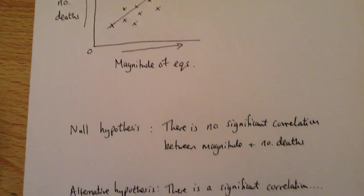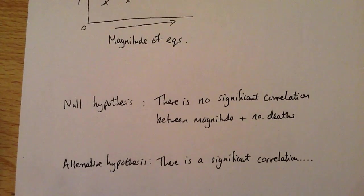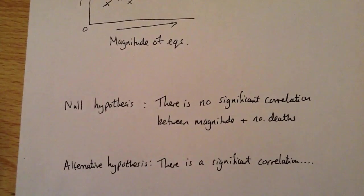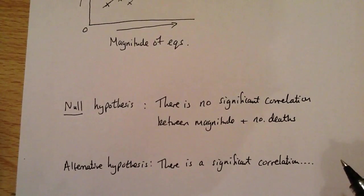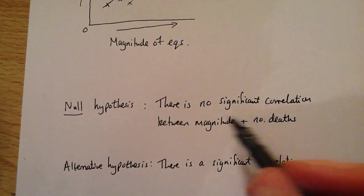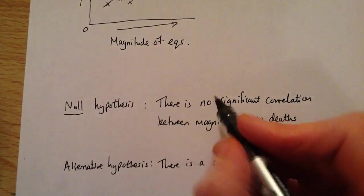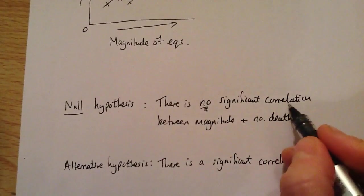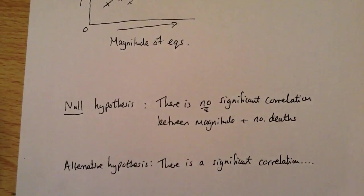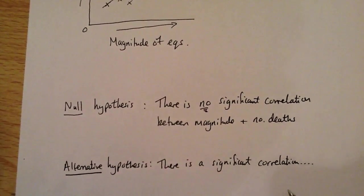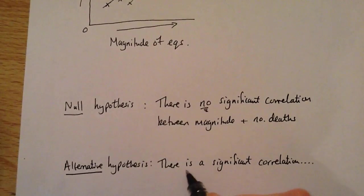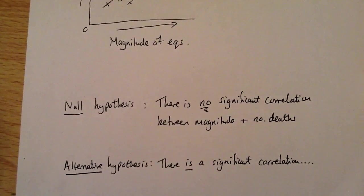The first thing you need to do is create a null hypothesis and an alternative hypothesis. The null hypothesis always has the word 'no' in it. In this case: there is no significant correlation between magnitude of earthquake and number of deaths. Then you create the alternative: there is a significant correlation between magnitude and number of deaths.